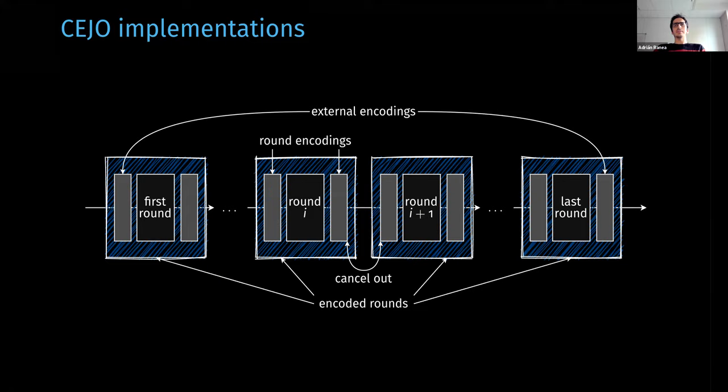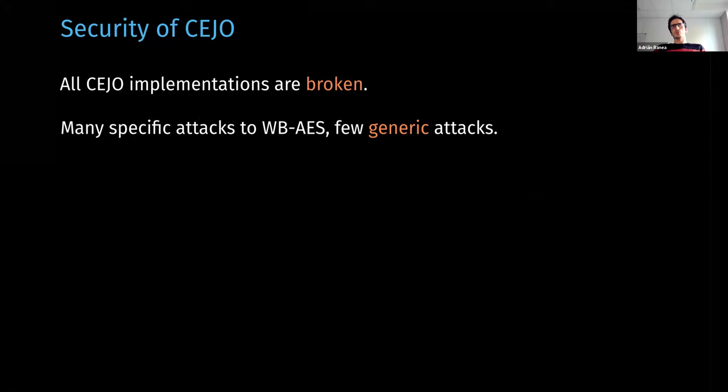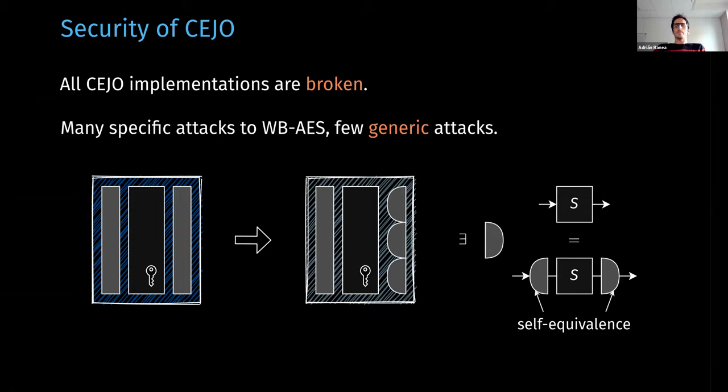Unfortunately, all CG implementations have been broken. While many of the attacks are specific to white-box implementations of AES, a few generic attacks to the CG framework have been published. In this work, we first show that the best that these generic attacks can do is to reduce the wrong encodings to self-equivalences of the S-box layer. Self-equivalence is just a pair of affine or linear permutations that, when composed to a function, the same function is obtained. This reduction is always efficient, but no generic analysis has been done on this type of encodings, and that is the topic of this work.